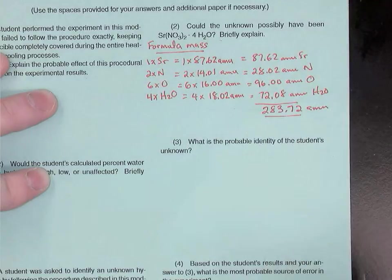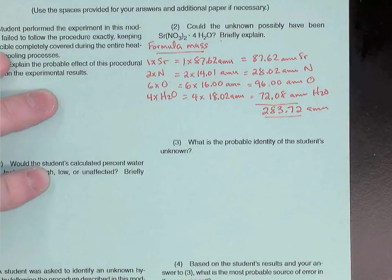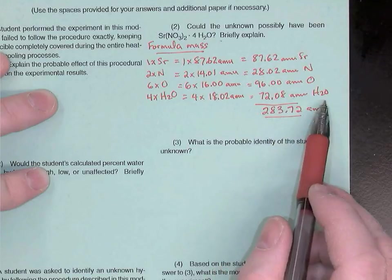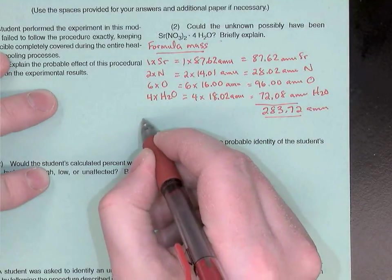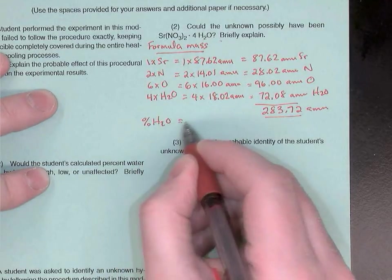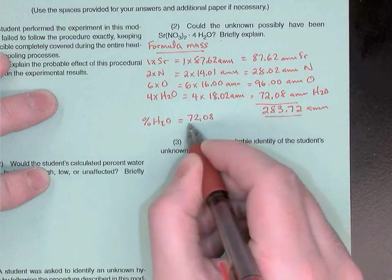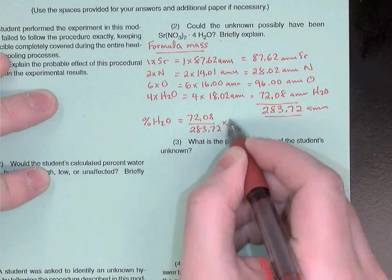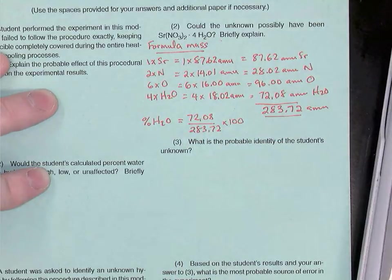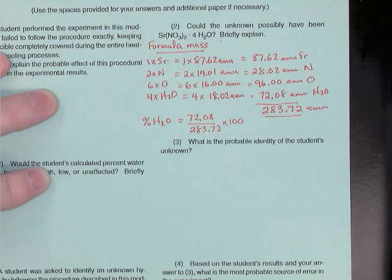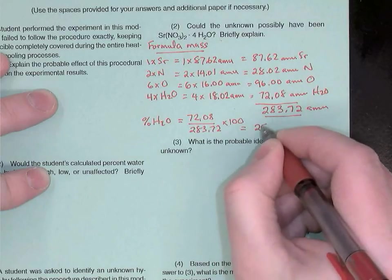Now, in that formula mass of 283.72 units, there were 72.08 units of water. So notice we could now calculate theoretically what the percentage of water in the strontium nitrate should be. It should equal 72.08 AMUs divided by 283.72, the total, times 100. And when we do that, we get an answer. 72.08 divided by 283.72 times 100. We get 25.4% water.